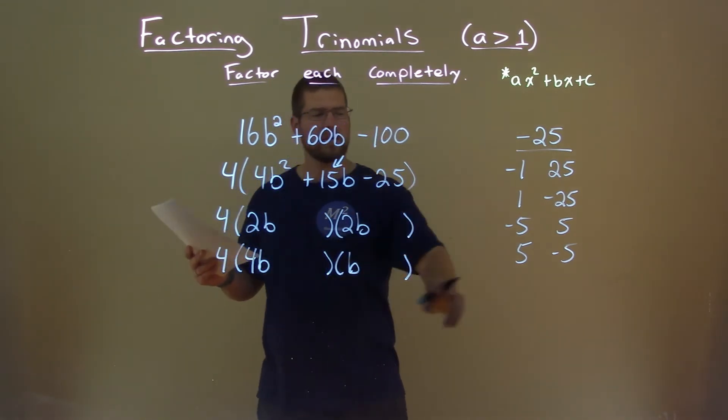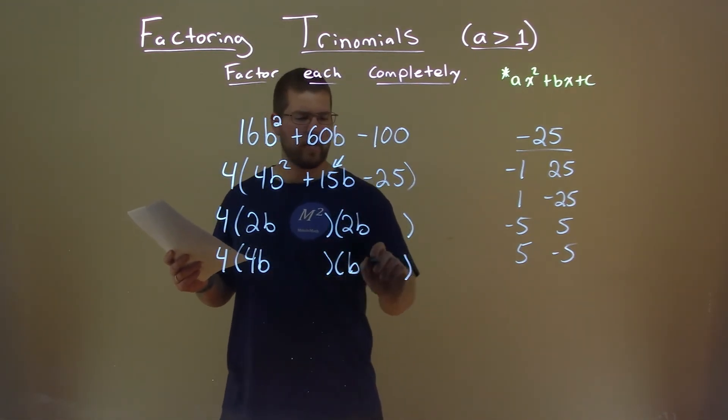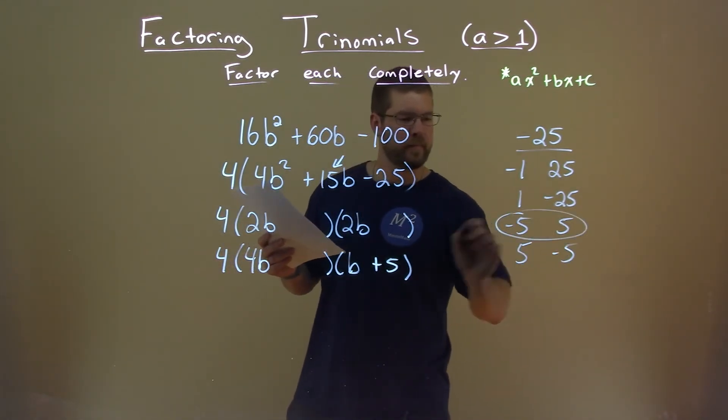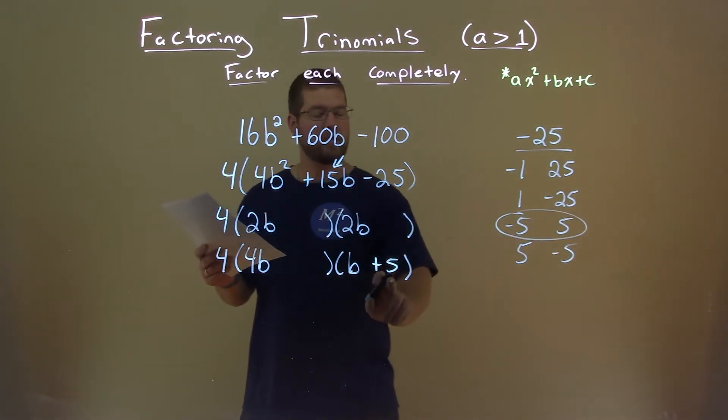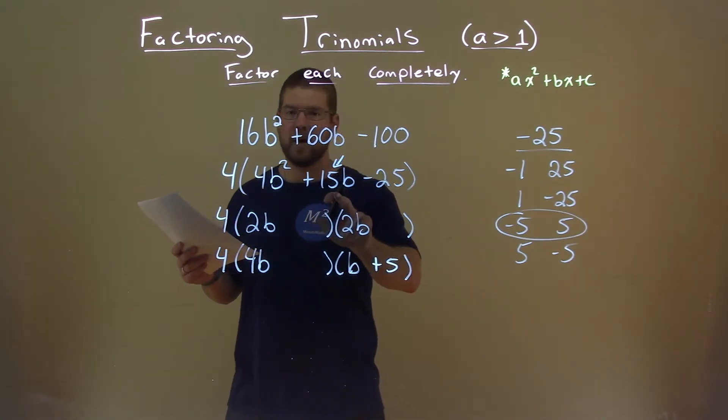But 4 times 5 is 20. We're pretty close to 15 there. So I put a positive 5 here. This pair right here. 4b times 5 is a positive 20b. b times negative 5 is a negative 5b. Subtract that. We have a positive 15b.